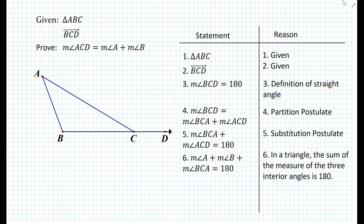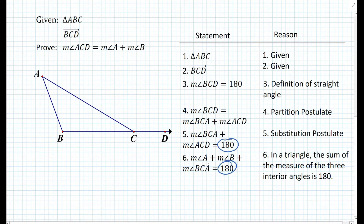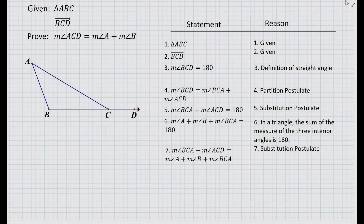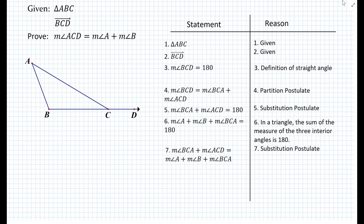However, in triangle ABC, we also know that the measure of angle A plus the measure of angle B plus the measure of angle BCA is equal to 180, because in a triangle, the sum of the measures of the three interior angles is 180. So if we look at those two equations, we know that both equal 180, so we can substitute and set them equal to each other. After substituting, we obtain that the measure of angle BCA plus the measure of angle ACD is equal to the measure of angle A plus the measure of angle B plus the measure of angle BCA. We have one angle in common on both sides, which is angle BCA.